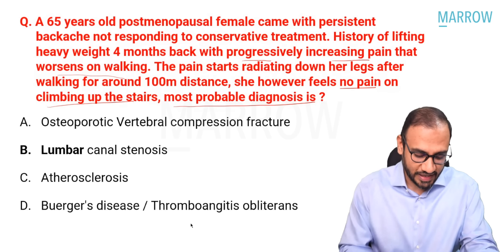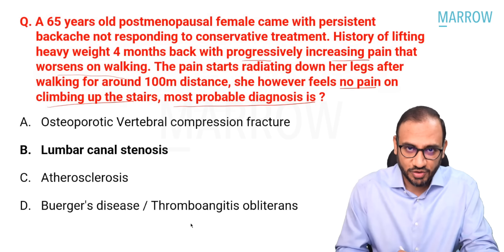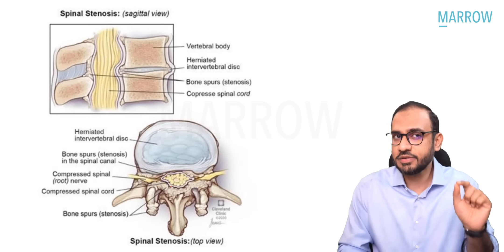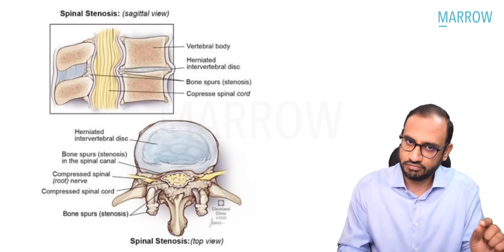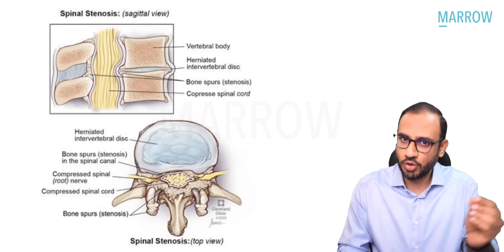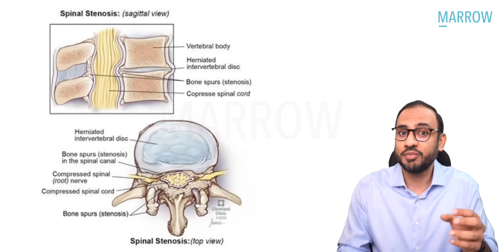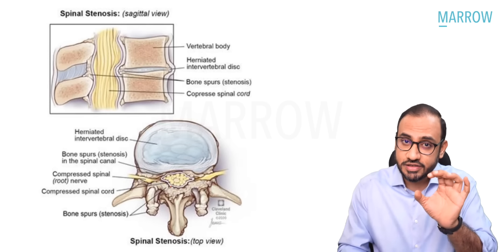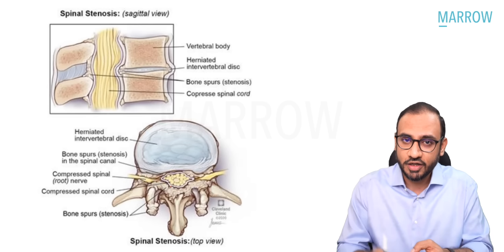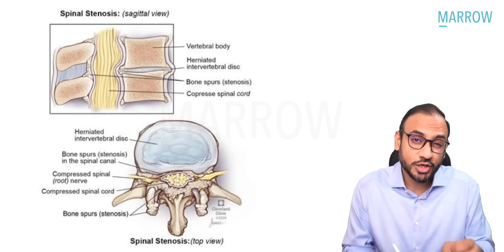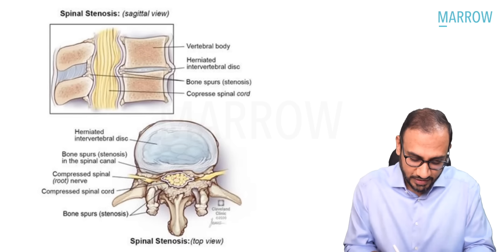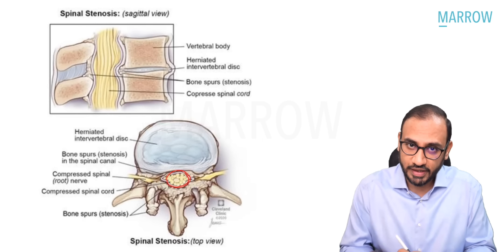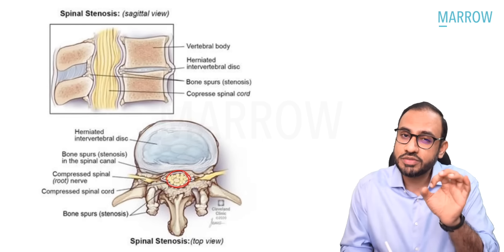The correct answer is lumbar canal stenosis. What is lumbar canal stenosis? You must have heard of prolapsed intervertebral disc, where the disc prolapses posteriorly and compresses the neural elements. Lumbar canal stenosis is the stenosis of the lumbar canal through which the spinal neural elements — the spinal cord and spinal nerves — pass. This canal is known as the lumbar or spinal canal, and this canal becomes stenosed.